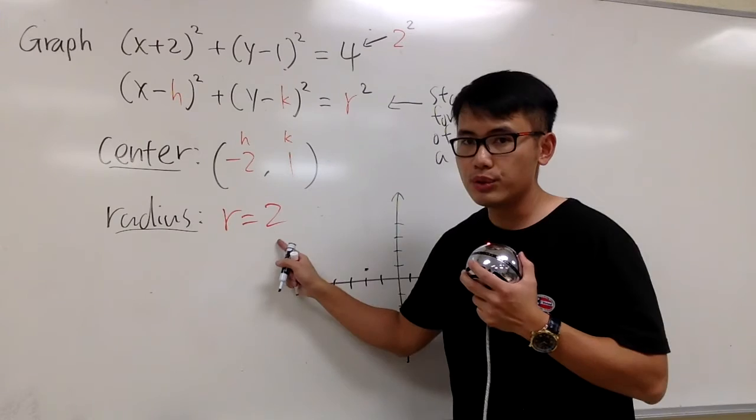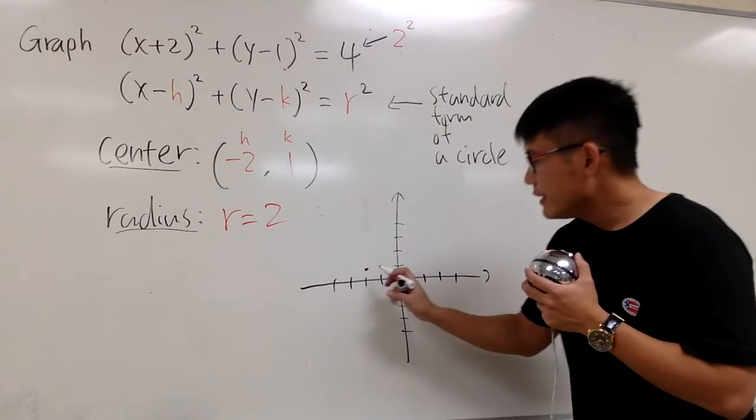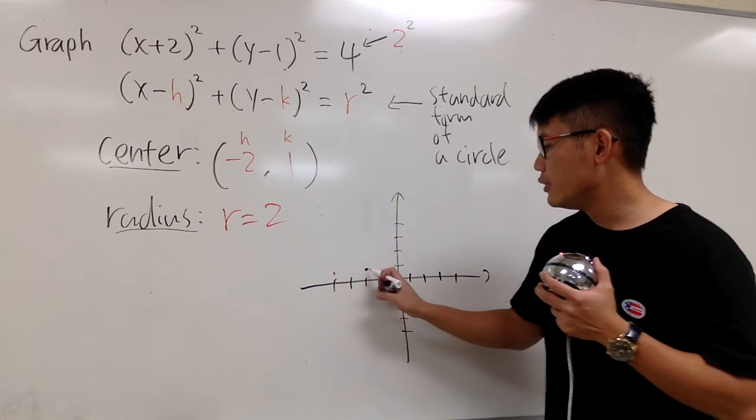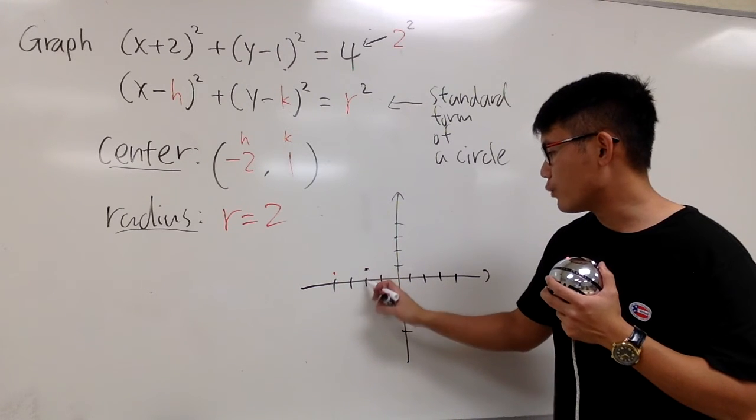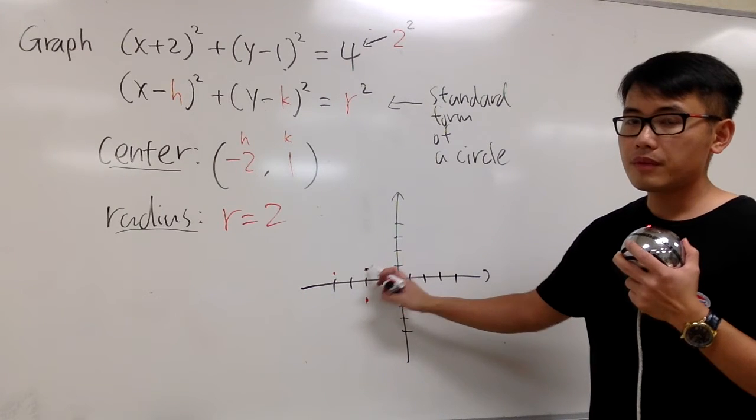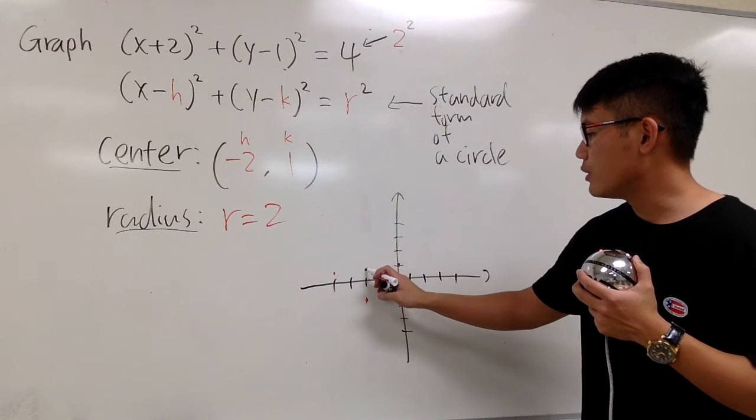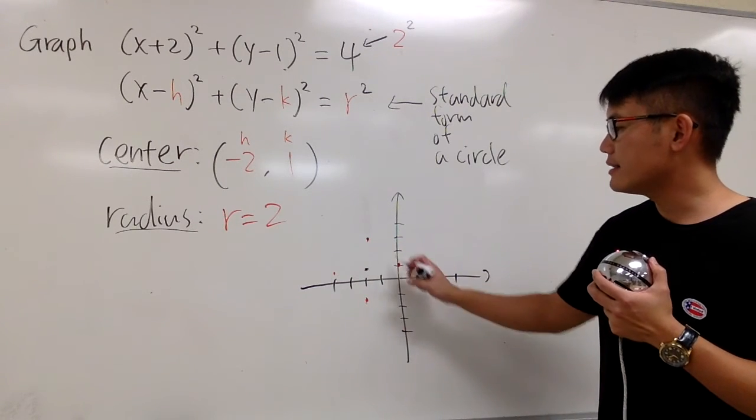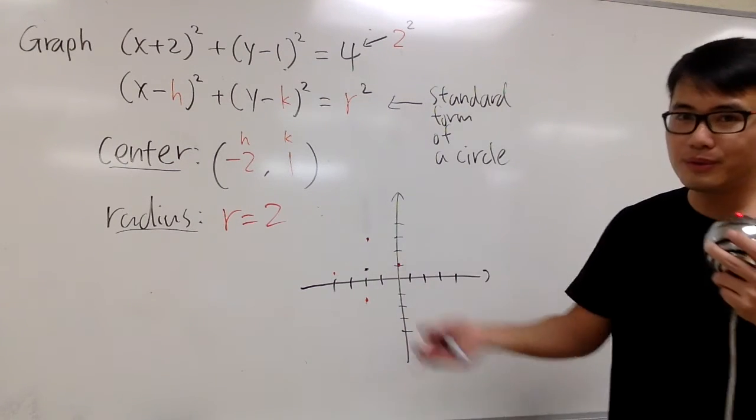And this is how you can do it. Start from the center, you are going to move to the left twice. You are going to go down twice, so we have 1, 2, like this. And you are going to move to the right twice, so 1, 2. And then go up, 1, 2. You go to the left, down, right, up. Twice.